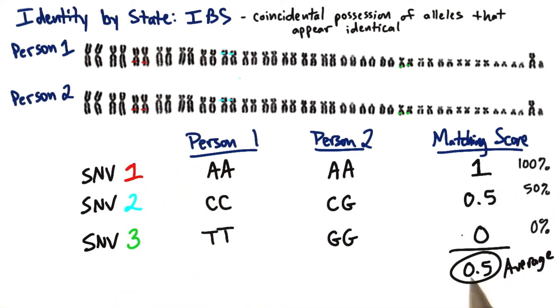We could also write this score from 0 to 1 as a 0% to 100%, where 100% is a perfect match, 50% is a half match, and 0% is no match at all.